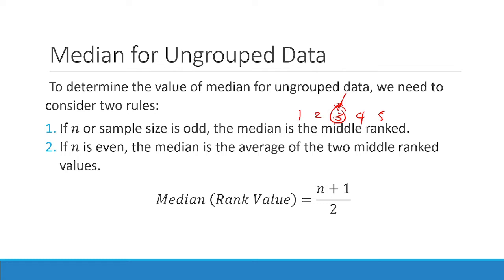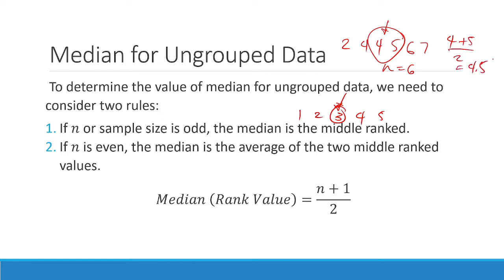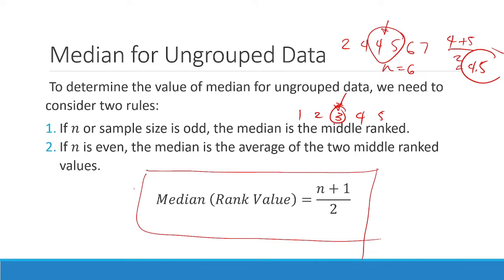Somewhere in between the 4 and 5. So what we do is get the average of 4 and 5: 4 plus 5 divided by 2 equals 9 divided by 2, so our median will be 4.5. That is how we apply the median when n is even. This is computed using the rank value formula — that formula tells you which value to select, not the median itself.